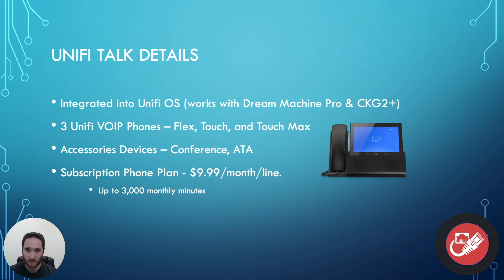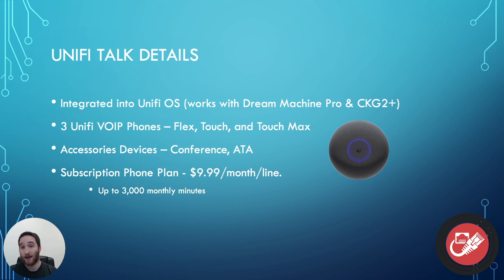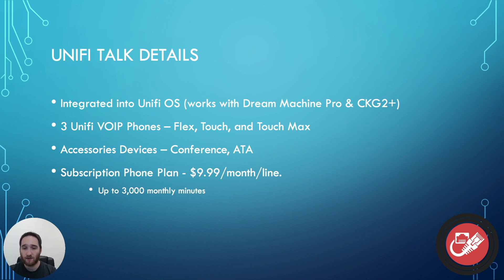Then there's the Touch Max, which is the jumbo-sized version of the Touch with more of a tablet-style screen — the one you'd give to your CEO or high-level execs. Both the Touch and Touch Max have webcams for video conference calling. They also have accessory devices, including the Conference — a little puck-looking thing that resembles a Unify access point, designed for your conference room table or ceiling mount. I'm really excited about that because I've been looking for a conference room phone for a long time. And there's the Unify Talk ATA, a little box that adapts any traditional analog phone handset into a voice-over-IP enabled phone to work with Unify Talk.